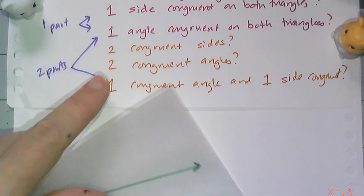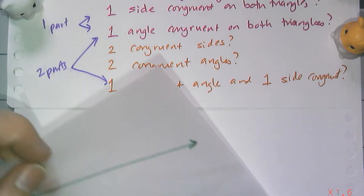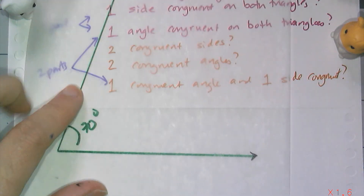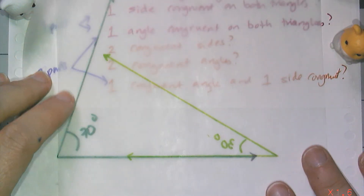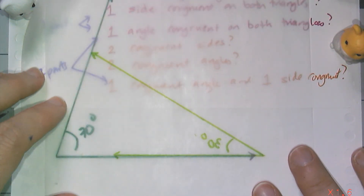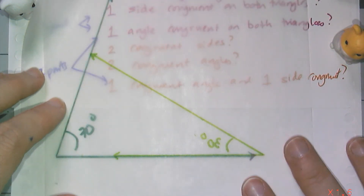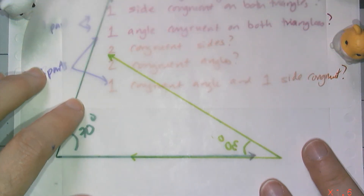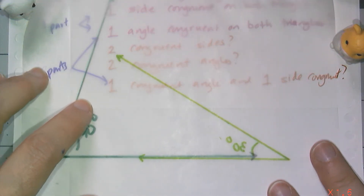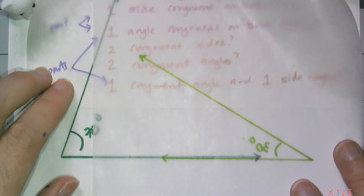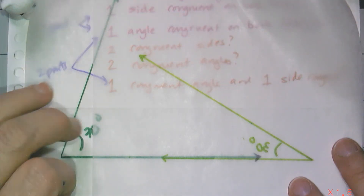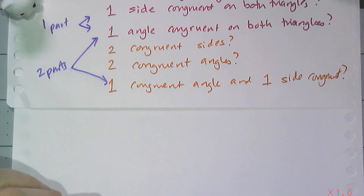What if I have two congruent angles? So I have two triangles that both have a 70-degree angle and a 30-degree angle. How many triangles can I construct? It looks like one at first, but I can just move this side and create tons of different triangles, each of which have a 30 and 70 degree angle, but they're not congruent. So two angles — not enough either.